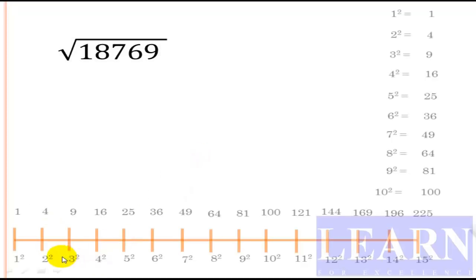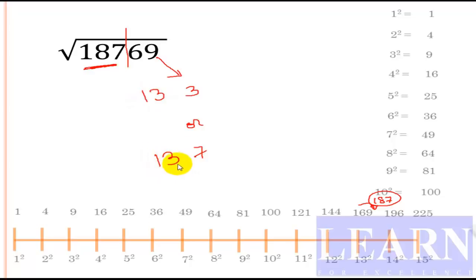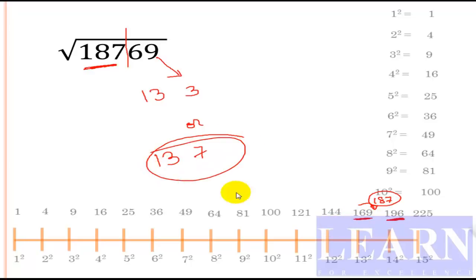The next problem is 18769. The last digit is 9, so the square root can end with 3 or 7. The first part is 187, which is greater than 169 (that is 13 squared), giving us either 133 or 137. Now check: is 187 closer to 196 or 169? It is closer to 196, so we take the greater value. The answer is 137.